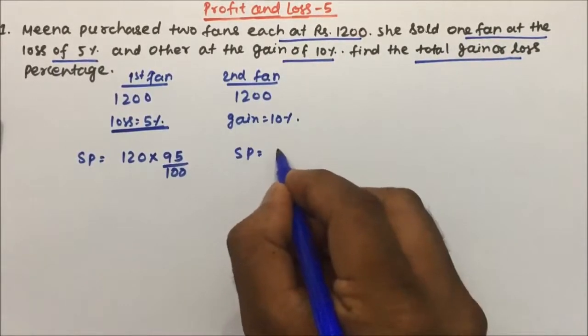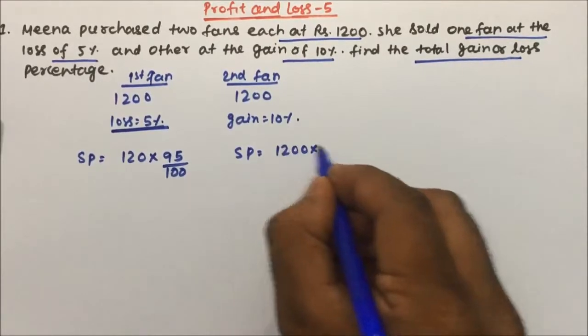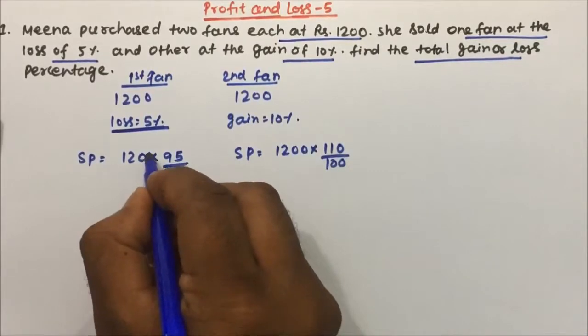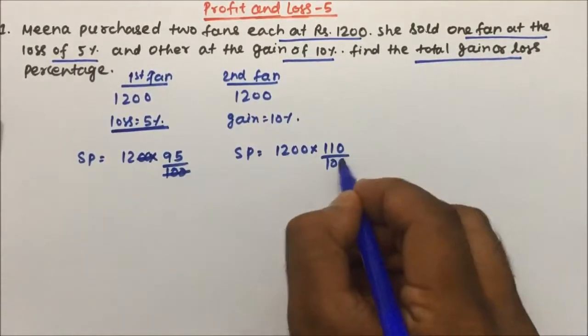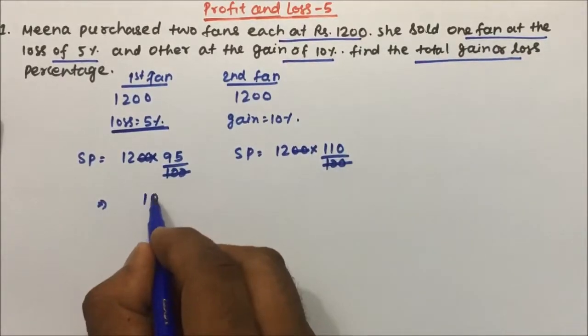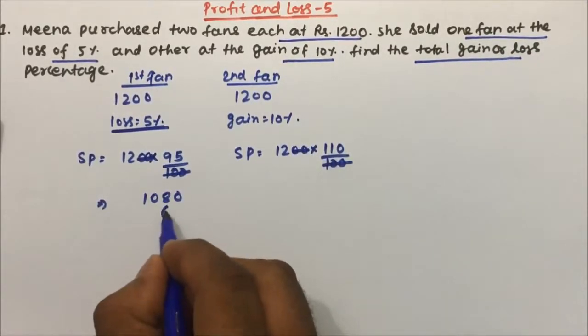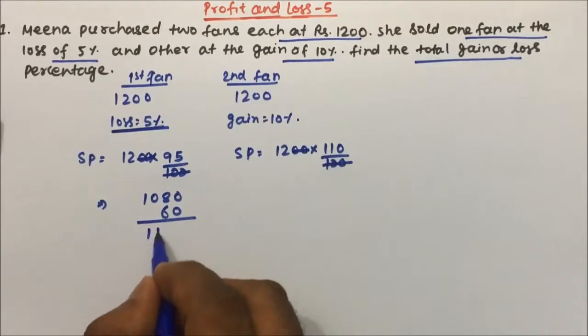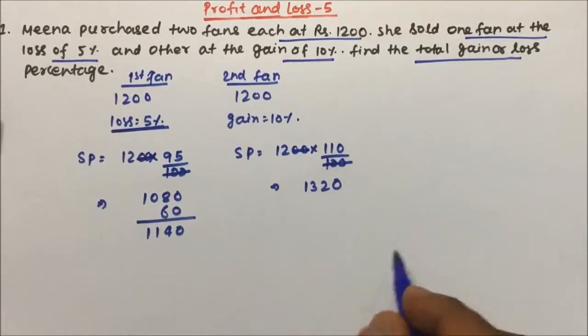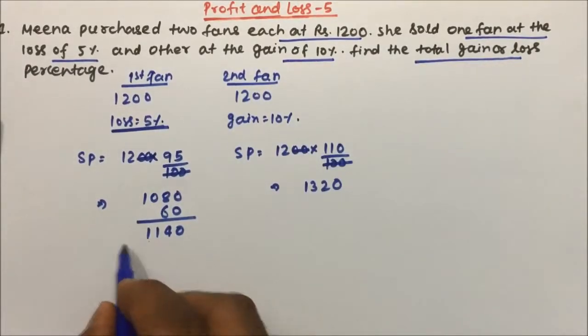What will be the selling price here? 1200 into gain is 10%, so 100 plus 10 is 110 by 100. Now this is 1200, so 2 zero 2 zero will get cancelled. So 12 into 95 is 1140 and 12 into 110 is 1320. So selling price of the first fan and the selling price of the second fan we have got it here.